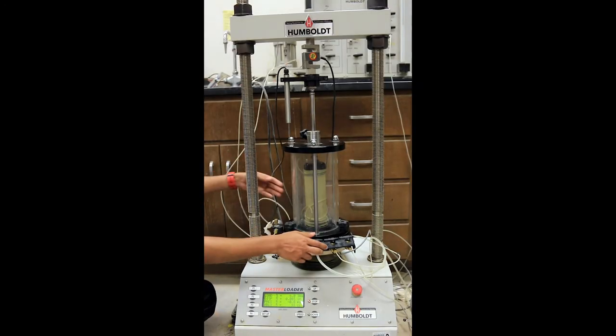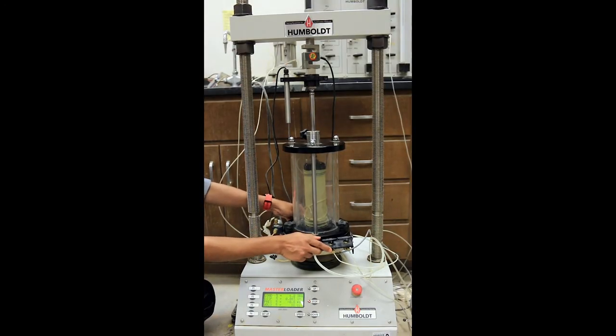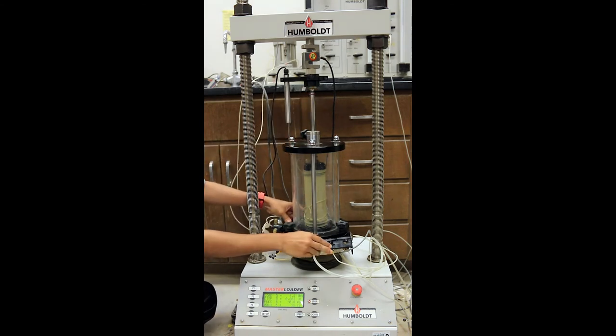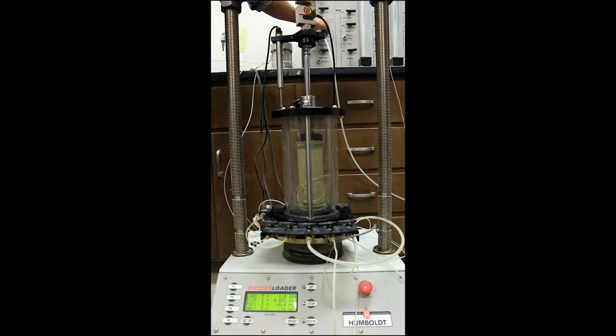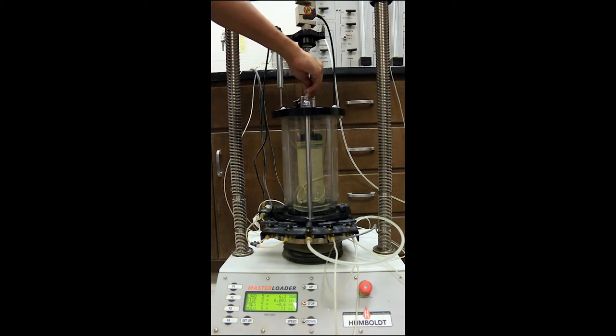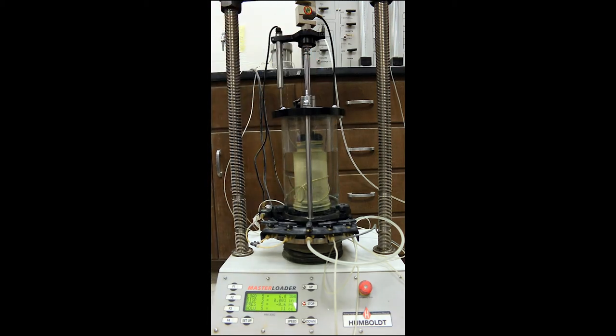Place the cell in the triaxial loading device. Bring the axial load position into contact with the specimen cap to permit proper seating and alignment of the piston with the cap. Open the necessary valves to allow the passage of water into the chamber. Fill the triaxial cell with water, keeping the air vent at the top of the cell open during this operation.